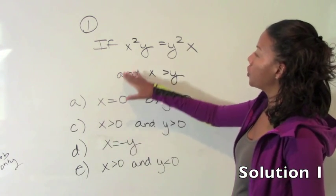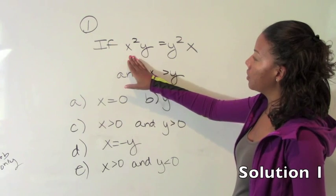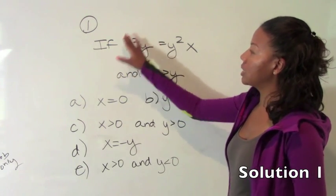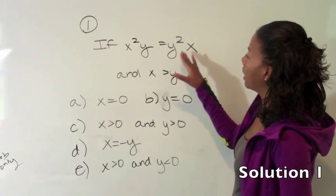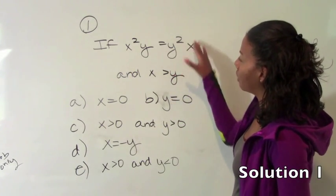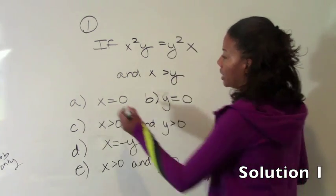A is true because you'll notice if x is zero, multiplying by zero is going to make this whole side zero, and if x is zero over here, you'll be multiplying y squared by zero, so this whole side will also be zero. So a is true.